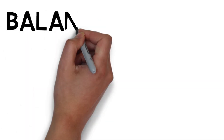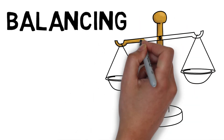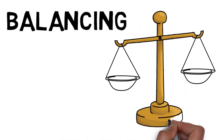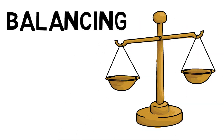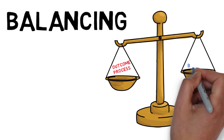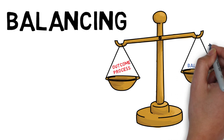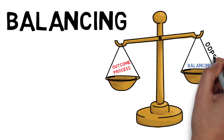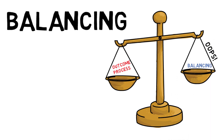Balancing measures are the measures that provide information on our improvement work from a different point of view. They are often the unintended consequences of our improvement work.